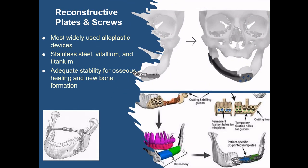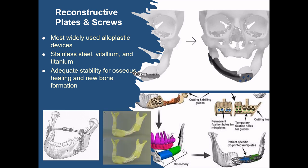Reconstruction plates and screws are the most widely used alloplastic devices for mandibular reconstruction. The most common metals used include stainless steel, vitalium, and titanium. These plates provide adequate stability for osseous healing and new bone formation. One disadvantage is that they result in higher maximum stress values compared to mini plates, which are less than 2 mm in diameter, whereas reconstruction plates are greater than 2 mm in diameter.